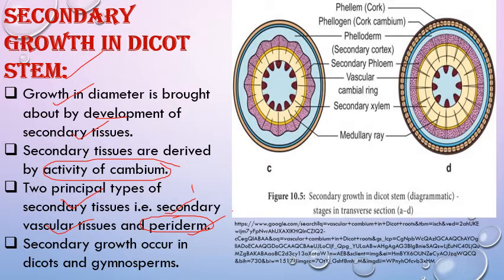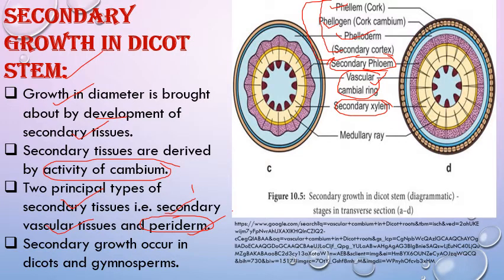In the picture, secondary xylem and secondary phloem are formed by vascular cambium. The second secondary tissue is periderm, which consists of phelloderm (secondary cortex), phellogen (cork cambium), and phellem. These three components combine to form periderm. These two secondary tissues are responsible for secondary growth in dicot stem. Secondary growth occurs in dicot plants and gymnosperms because their vascular bundles are of open type.